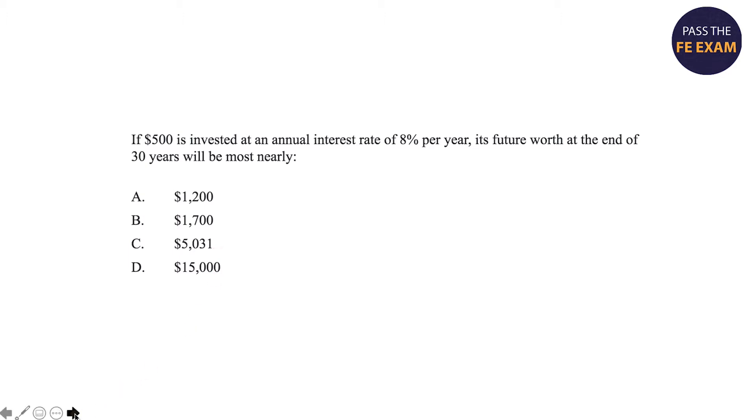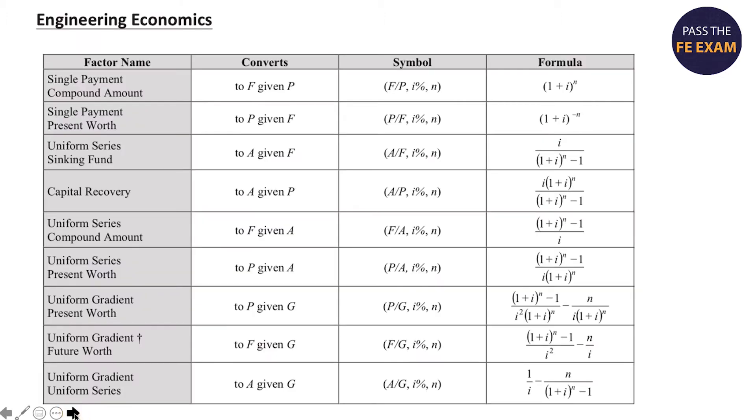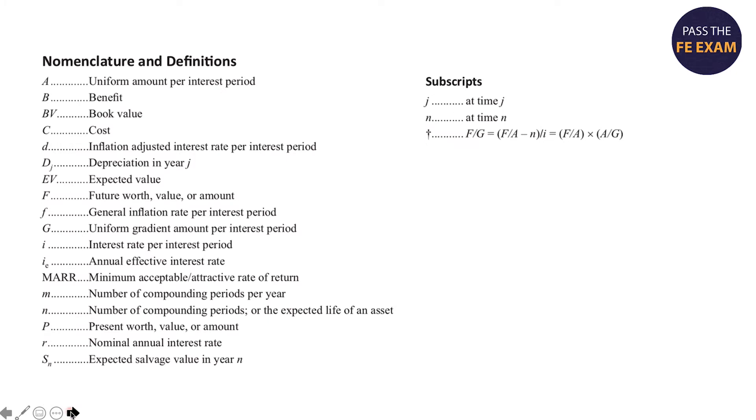So the first thing we want to do is go to our FE handbook. Hopefully you have the latest version 10.01, or whatever it is at the time you're watching this video. In the handbook on page 230 starts the engineering economics section. The top of the page has all of the formulas you can see here. But then on the bottom of the page, which is really important, are the nomenclature and definitions. You definitely want to read through this as part of your studying and preparation and be familiar with these terms. And of course, by doing practice problems like this one, you will get much more comfortable with them.